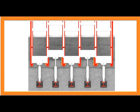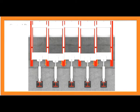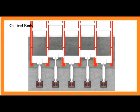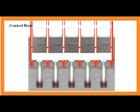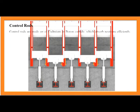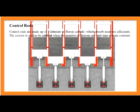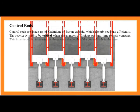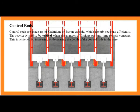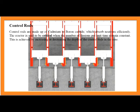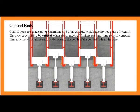Control Rods: Control rods are made of cadmium or boron carbide, which absorb neutrons efficiently. The reactor is critical when the number of fissions per unit time remains constant. This is achieved by adjusting the depth of the control rods in the core.